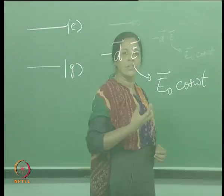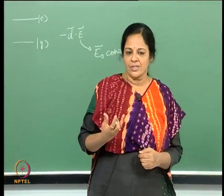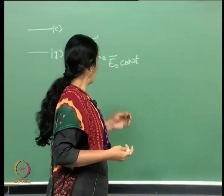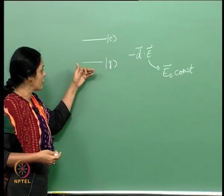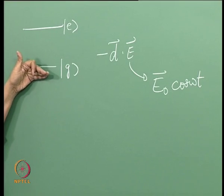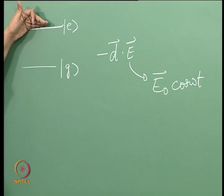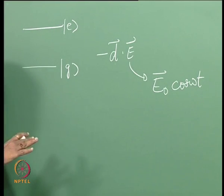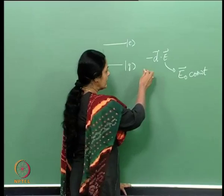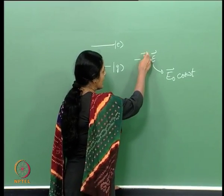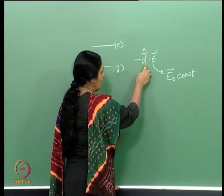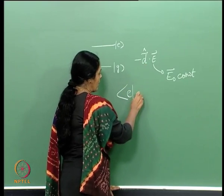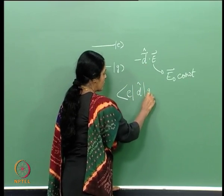There was a natural frequency in the problem — the Rabi frequency — and at a certain instant of time, even if the atom initially started in the ground state, it would have moved completely to the excited state, resulting in a population transfer. This is a semi-classical model in the sense that the atom operator is quantum and we were interested in matrix elements of this form.